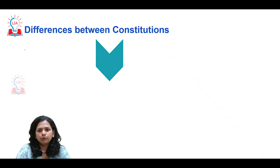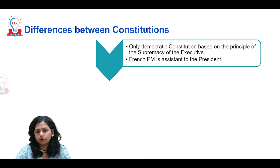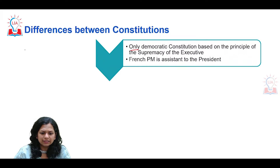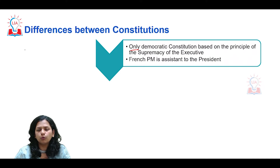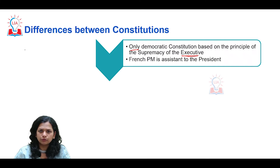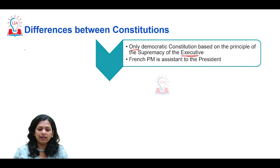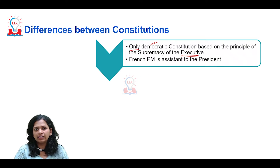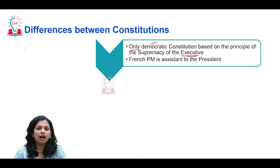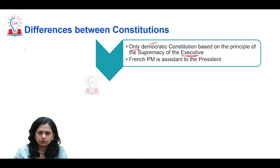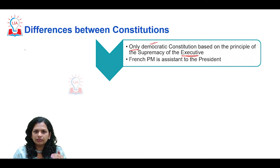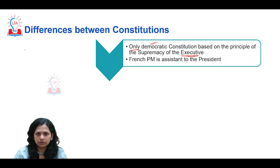Now turning to the differences: the French constitution is considered the only democratic constitution based on the principle of supremacy of the executive. In a presidential form of government, so much importance is given to the executive head of state that there are virtually no checks and balances — a very unusual feature for any democratic constitution, since democracies generally try to limit the power of the executive.